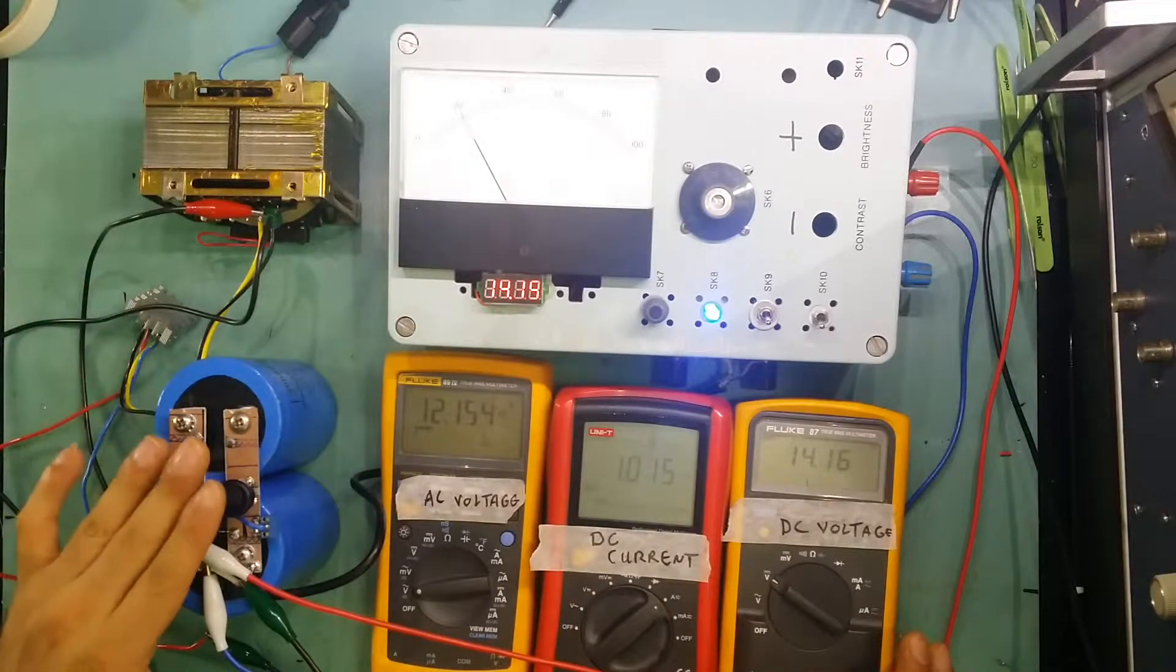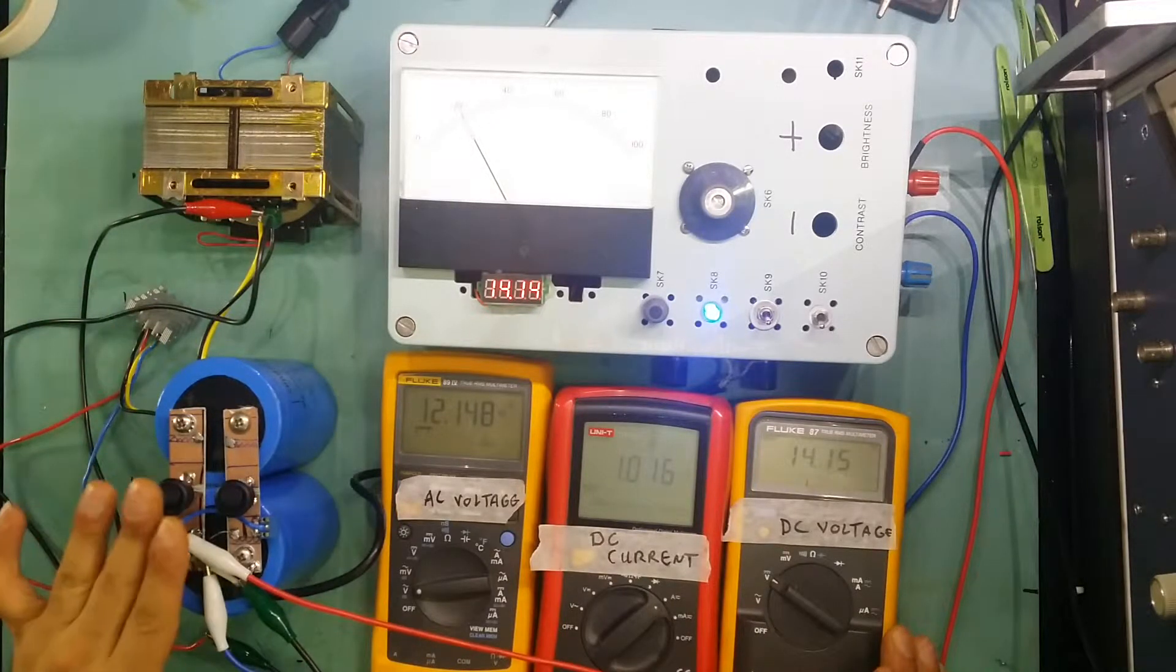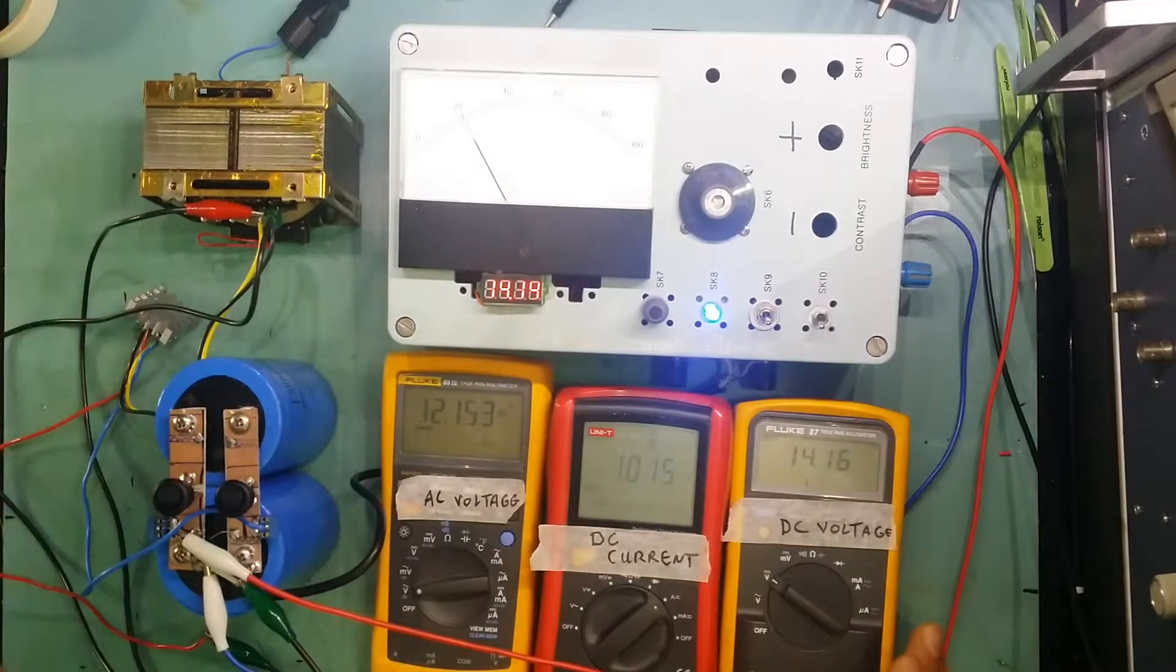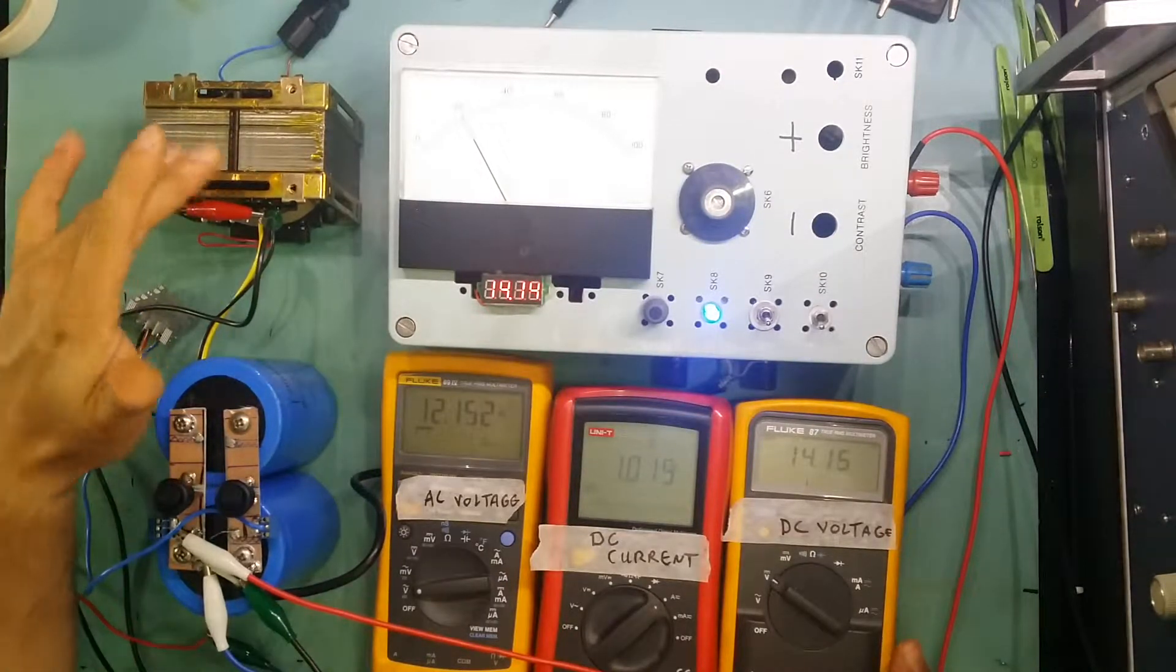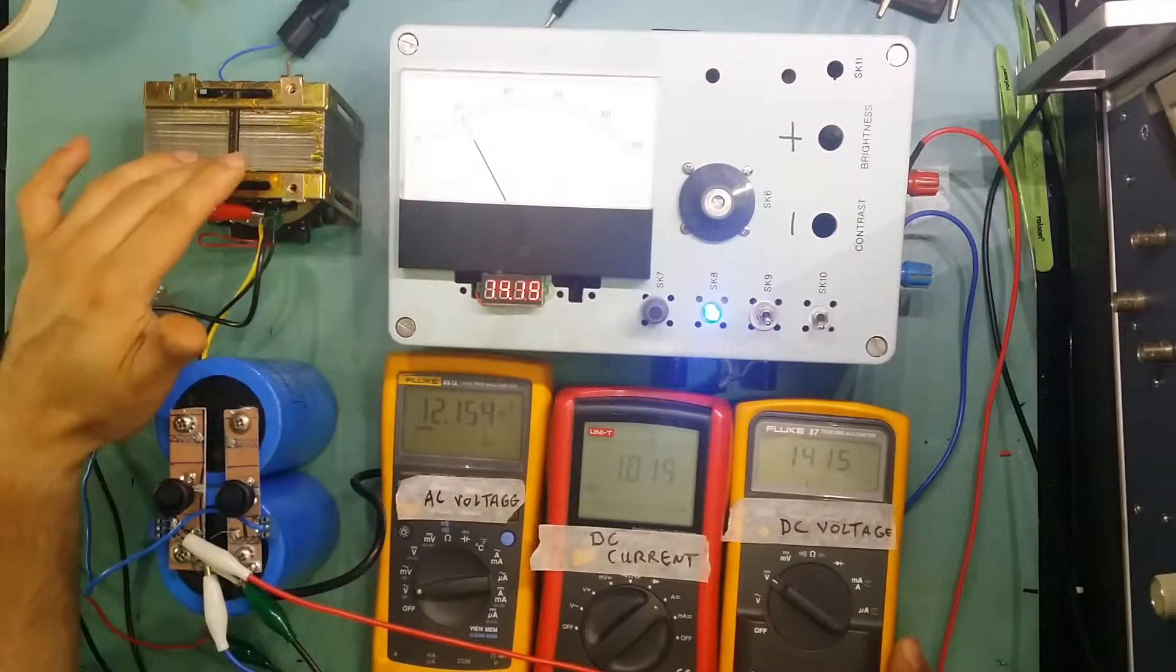What I'll do later on I'll connect the scope here and find out the ripple. But at the moment I'm just trying to figure out the voltage drop on the transformer to see if this transformer is good for my power supply or not.